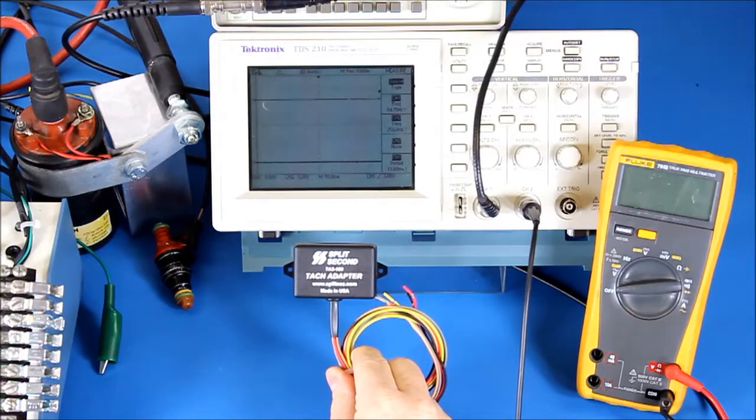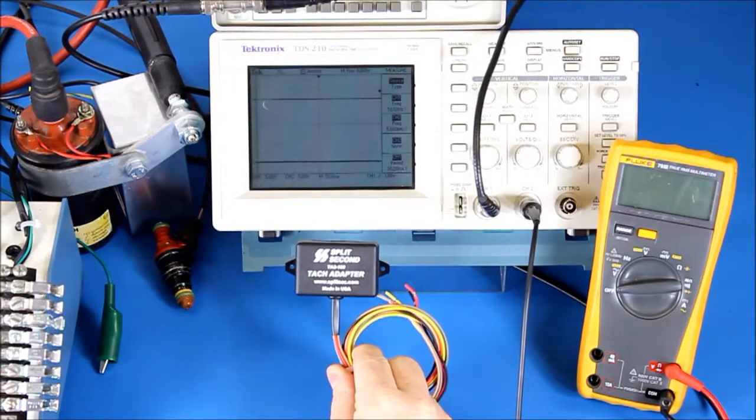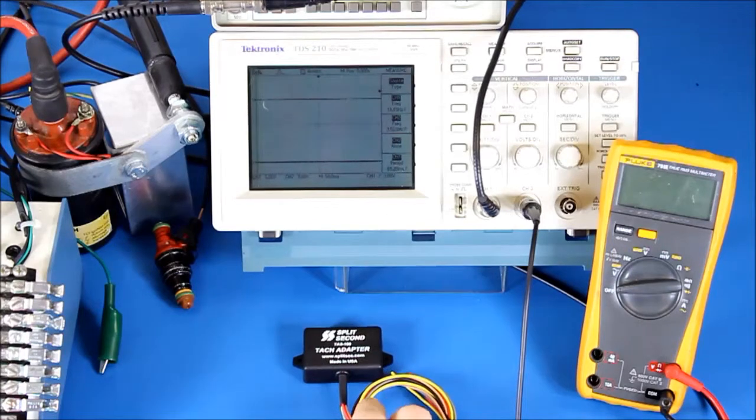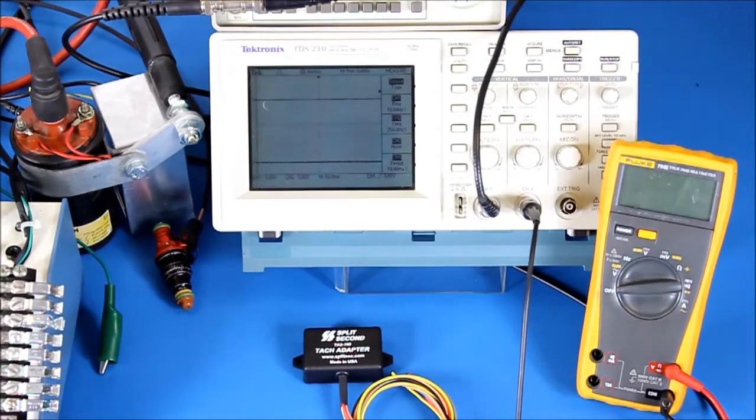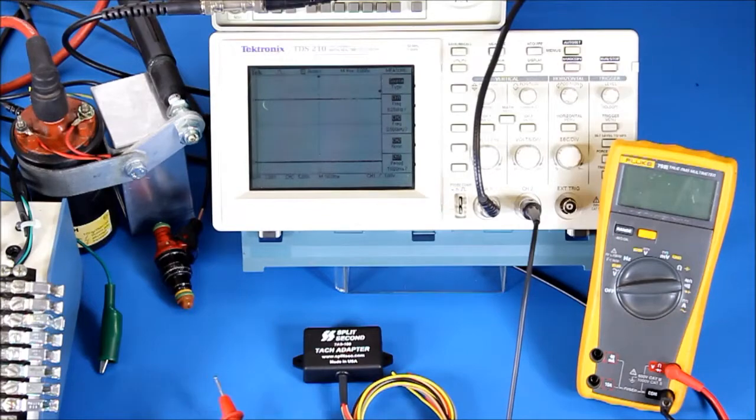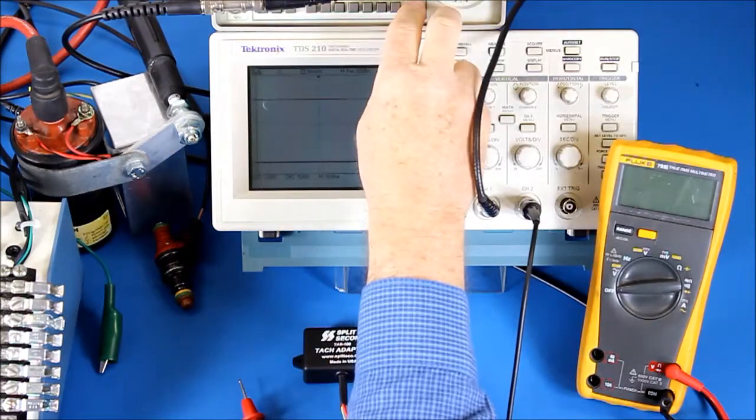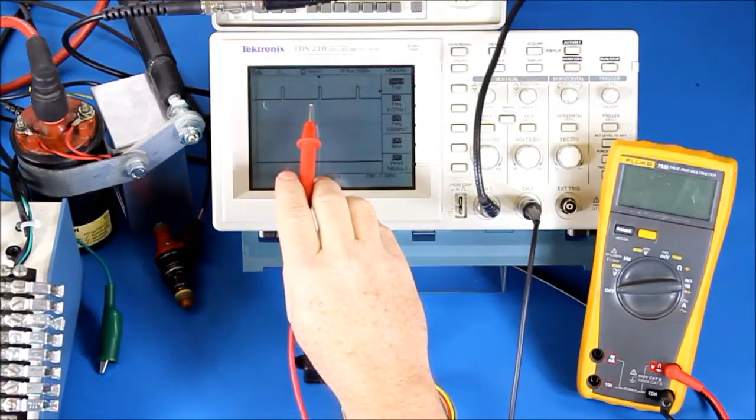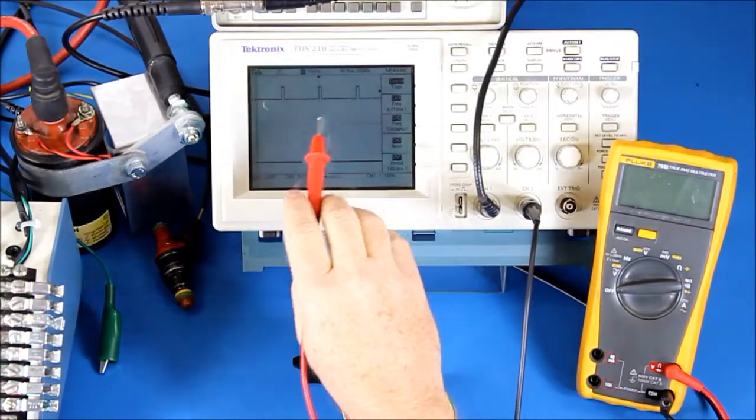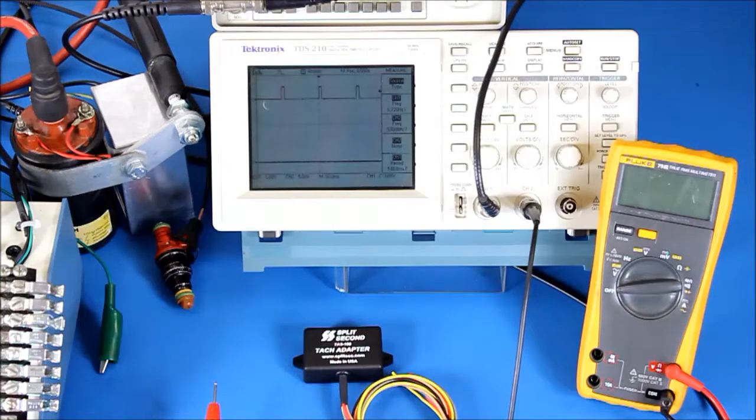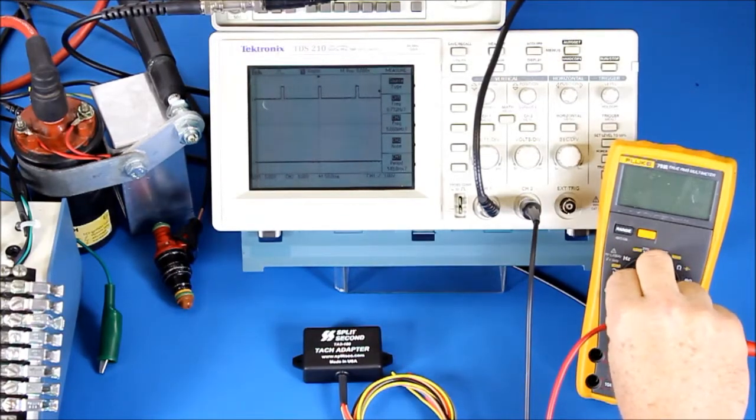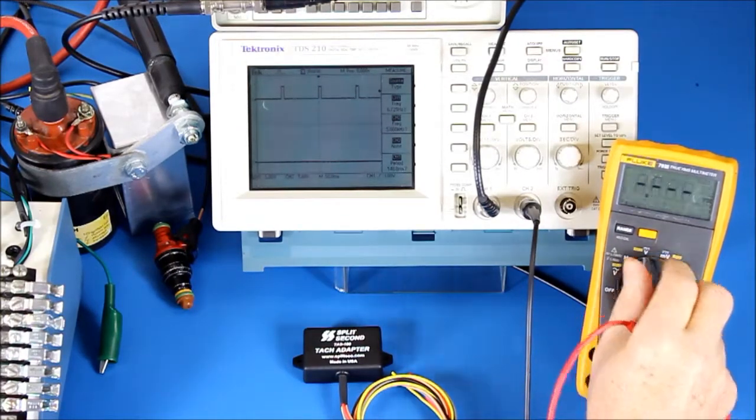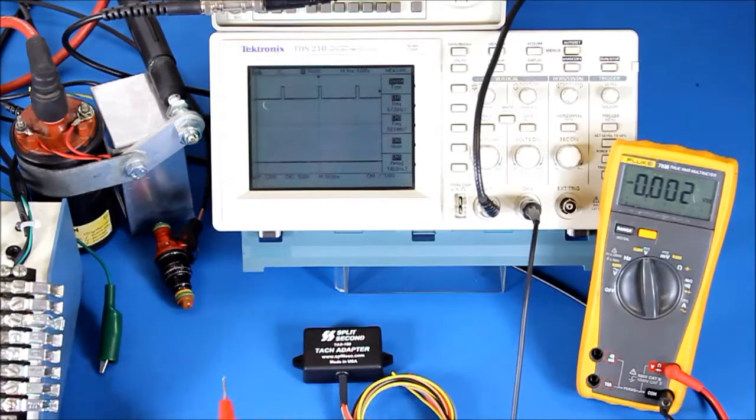Before we can connect the TAC adapter, we have to determine what kind of input we're going to be using. So I'm going to take a few minutes and go through the different types of signals we could encounter on an engine. I'll turn on the generator and I am producing these 0 to 5 volt pulses here. These are the kinds of signals you would see if you have a buffered coil, a coil that has a driver built into it.